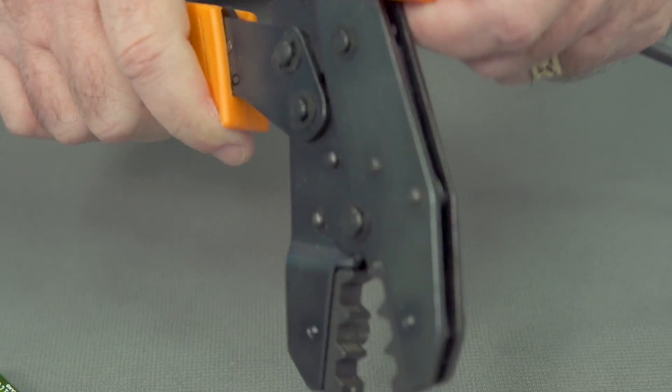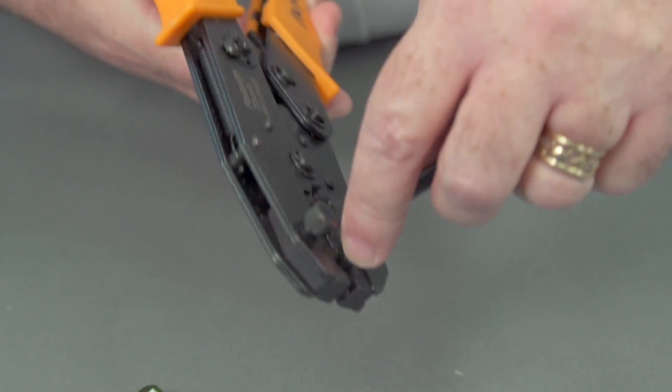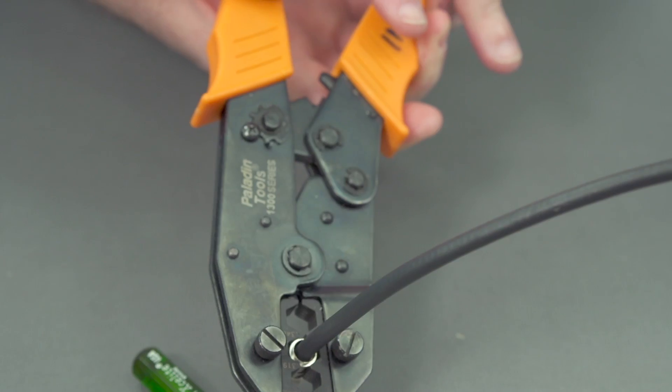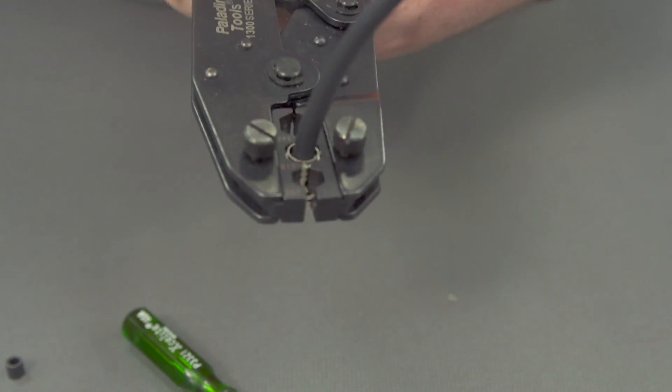We'll open up the crimper, place it in the jaws. We'll give it a good squeeze. So make sure you go to the gym first.